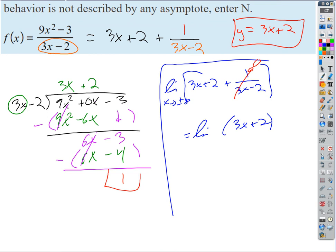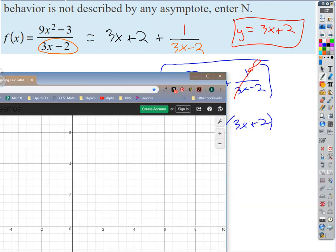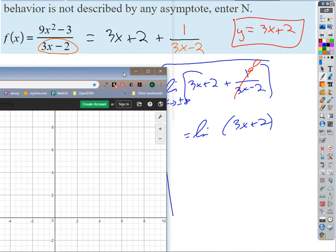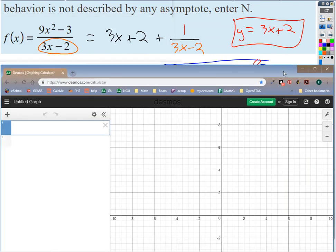You do, right. In the limit, the end behavior, that term goes away, right? The limit of that final term is just 0. So all you're left with, and we'll see this on Desmos. So we've got, oh, come on.